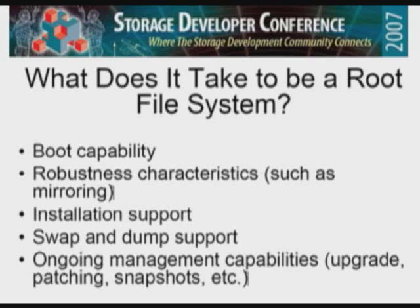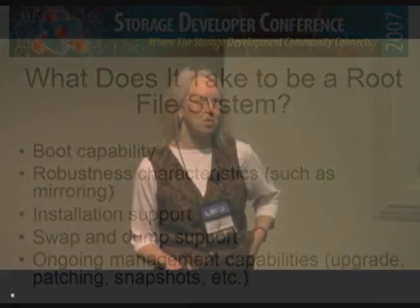So in general, what does it take to make a file system be able to be a root file system? First, you have to be able to boot off of it, although you can actually get around that. You could boot off something else and switch, but that's a hack, so you really want to be able to boot off the system natively. You need robustness characteristics, such as mirroring and such. You need installation support — you need to be able to install the thing, because to get a root file system, you start off with nothing, so you need to be able to install it.